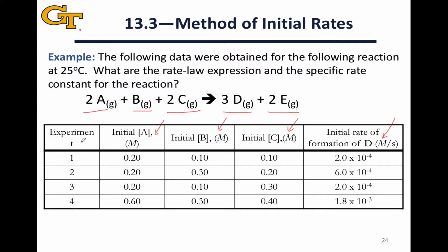The left-hand column is just to denote the experiment number to make our lives a little bit easier in tracking the experiments. The first step in applying the method of initial rates is to look for two experiments where the concentration of only one reactant changes. So you want to look at commonalities throughout the table.